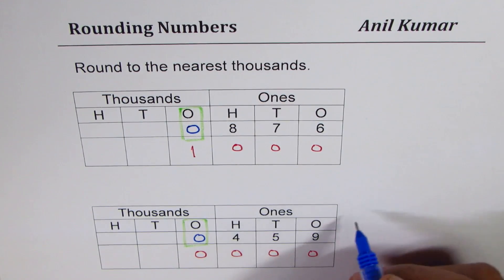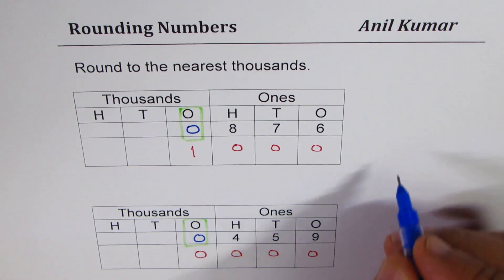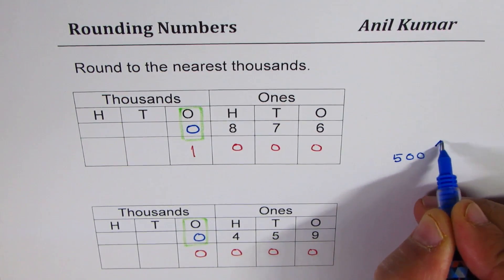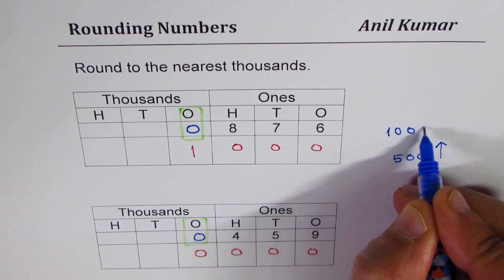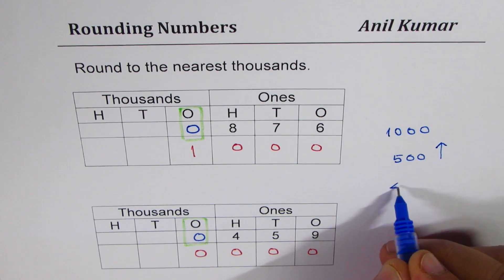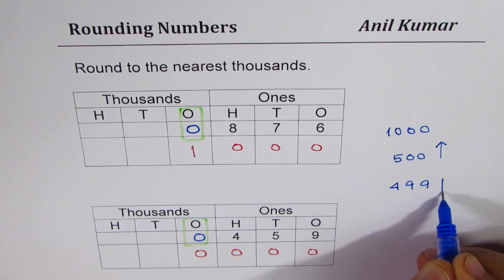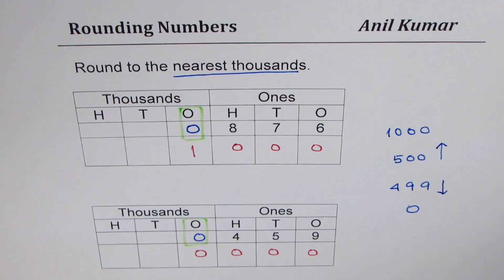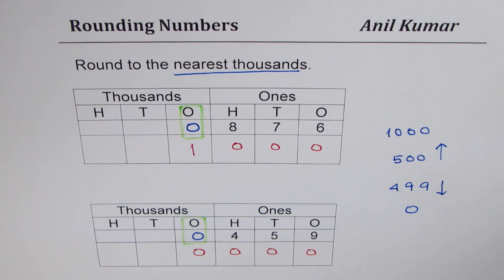In the last example, the number to the right of zero is four — less than five — so zero remains zero and all other digits become zero. Therefore, 459 rounds to zero. All numbers less than 500 will round to zero when rounding to nearest thousands, while 500 or more rounds to 1,000. I hope the concept is clear. Thank you and all the best.